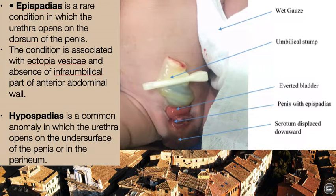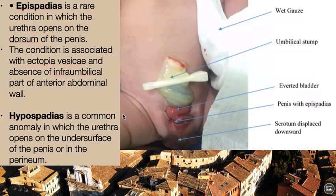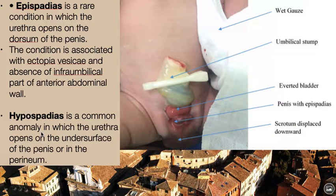Epispadias is a condition in which the urethra opens on the dorsum of the penis. This condition is associated with ectopia vesicae, where the anterior abdominal wall is absent below the umbilicus. Hypospadias is a common anomaly in which the urethra opens on the undersurface of the penis or in the perineum.